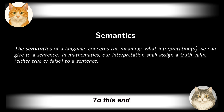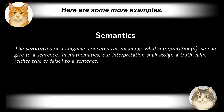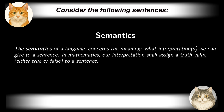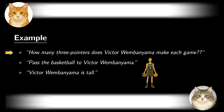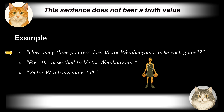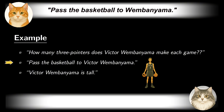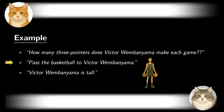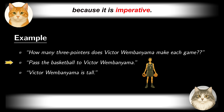To this end, the sentences under our investigation must be declarative and unambiguous. Here are some examples. 'How many three-pointers does Victor Wembanyama make each game?' — this sentence does not bear a truth value because it is interrogative. 'Pass the basketball to Wembanyama' — this sentence does not bear a truth value either, because it is imperative.